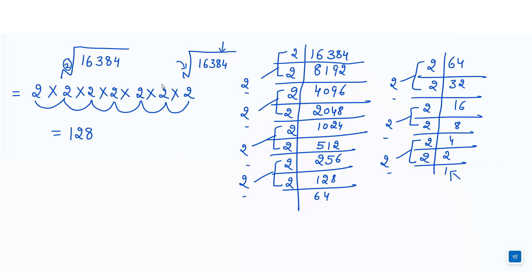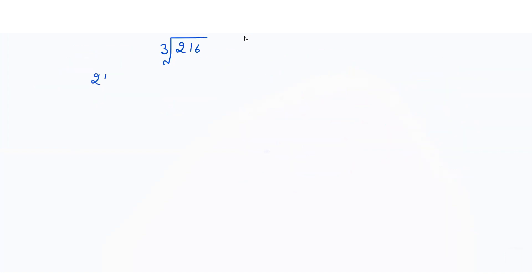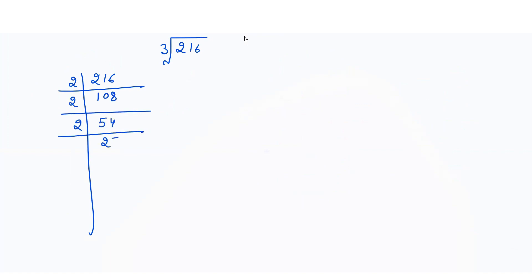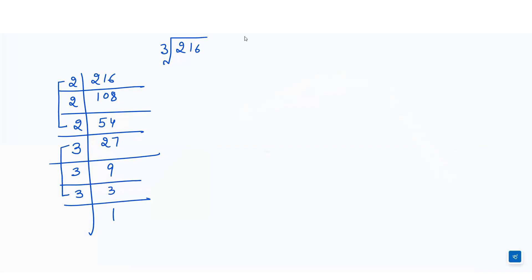Similarly, let's find out the cube root of a number. Cube root means in place of 2 we will write down 3, which means we have to make sets of 3 same numbers. Let's find the cube root of 216 by making its prime factors. We will make sets of 3 same numbers and write down each number once. We get the answer as 2 into 3, which equals 6. So that is the cube root of 216.